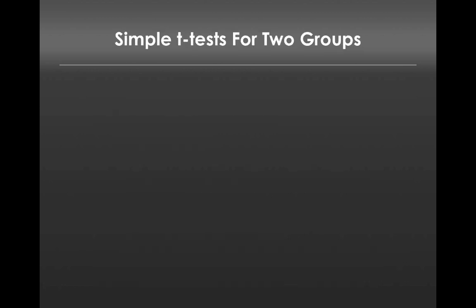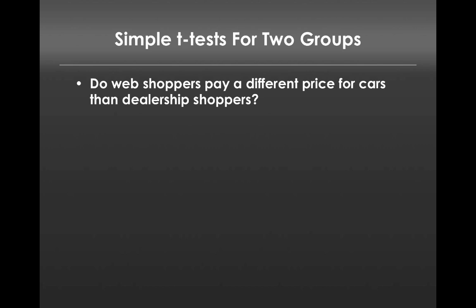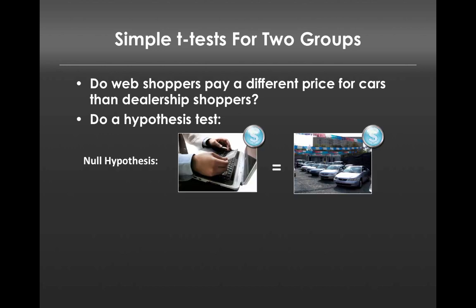To give an example without looking at data yet, let's imagine we want to know if web shoppers pay a different price for cars than dealership shoppers. We want to know if people who buy cars online pay a different price than people who buy cars in a dealership. This is a hypothesis test, and we first set up the null hypothesis — that people who buy online pay the exact same price as people who buy in dealerships.